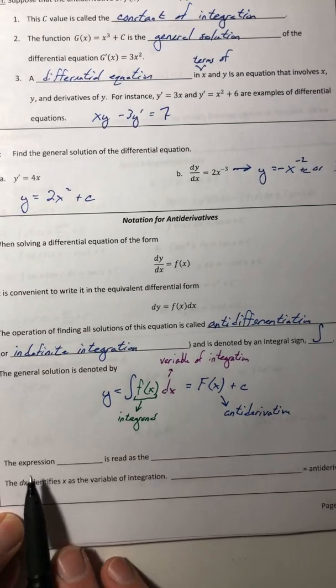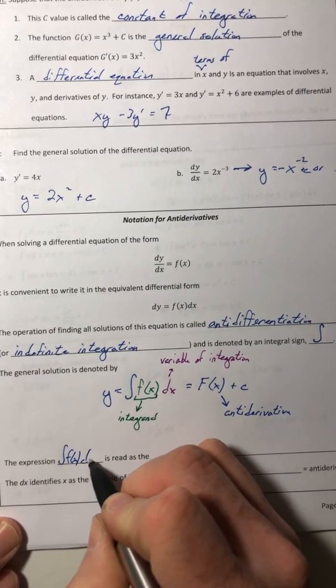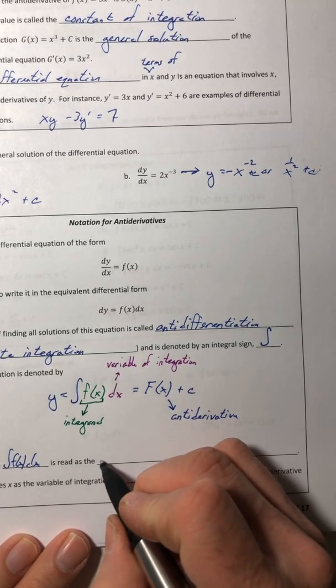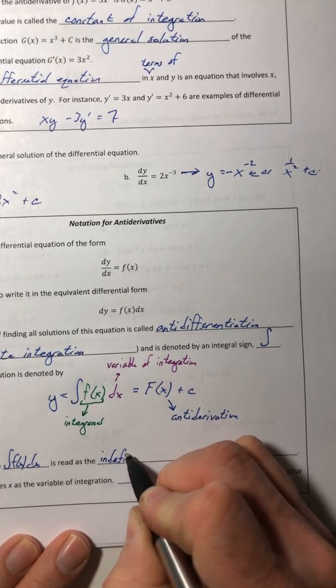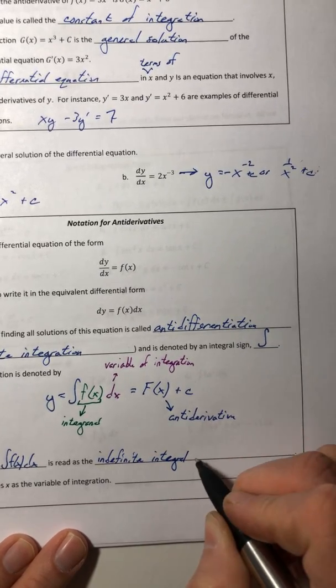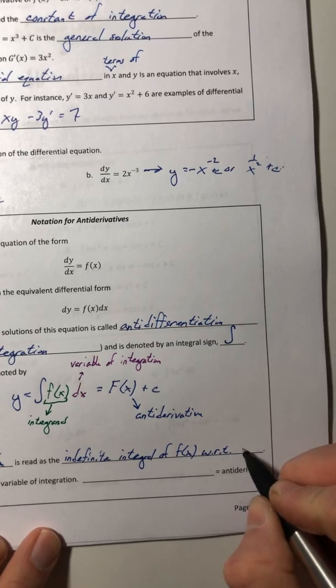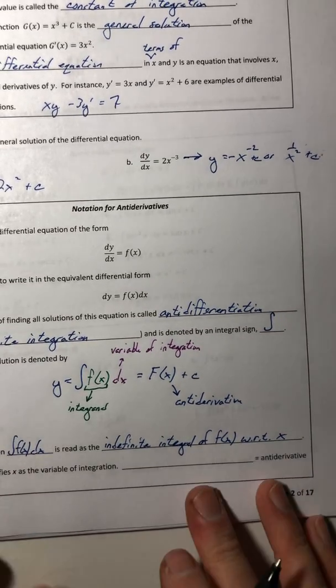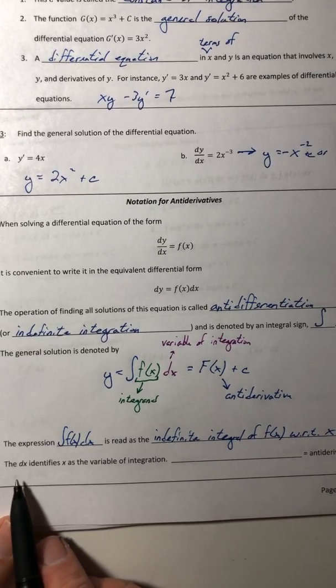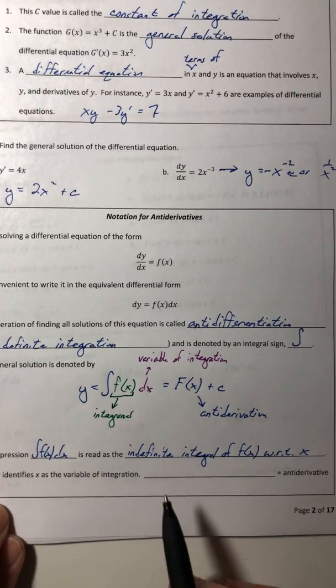Okay, so the expression with that integral symbol of f of x dx, that is read as the indefinite integral of f of x with respect to x, which is quite a mouthful to say. But that's what it is. So again, this dx, it identifies the x in this case, because it's a dx. It identifies x as the variable of integration.